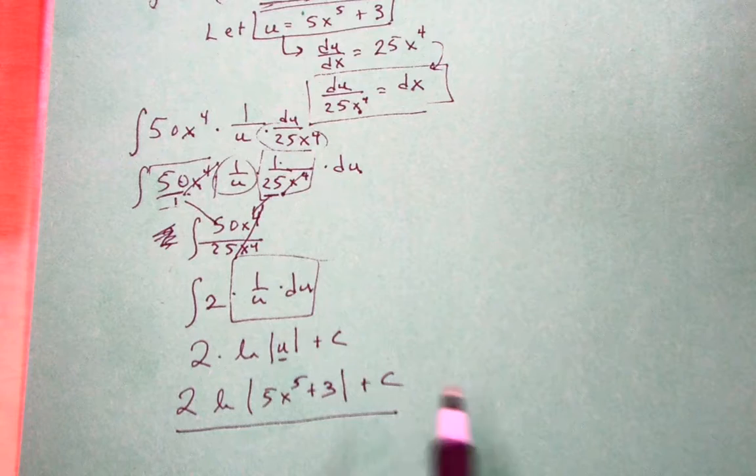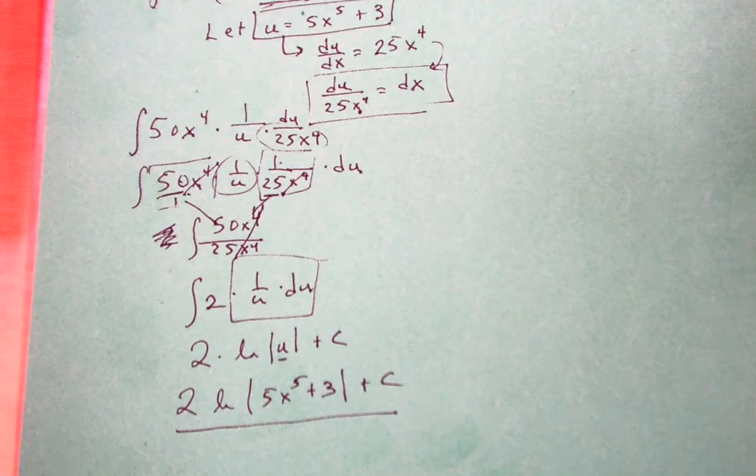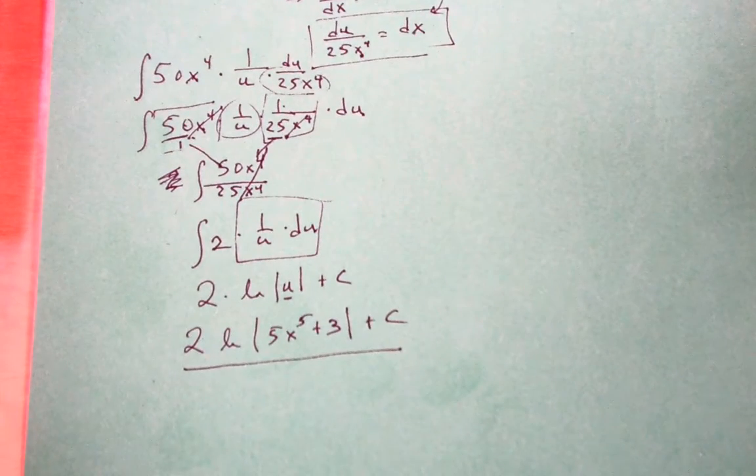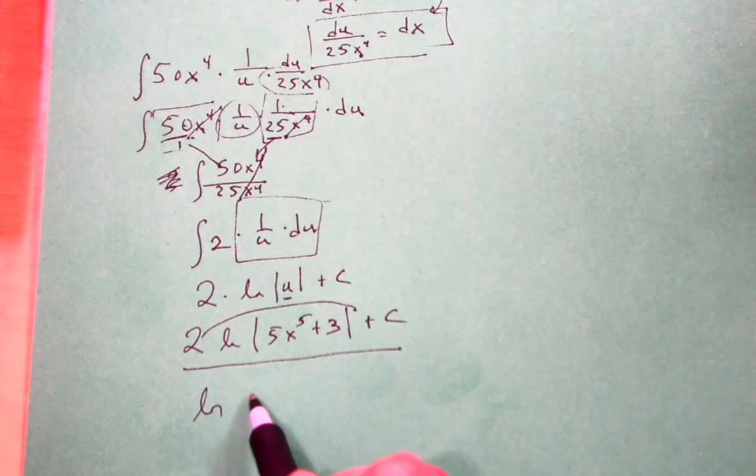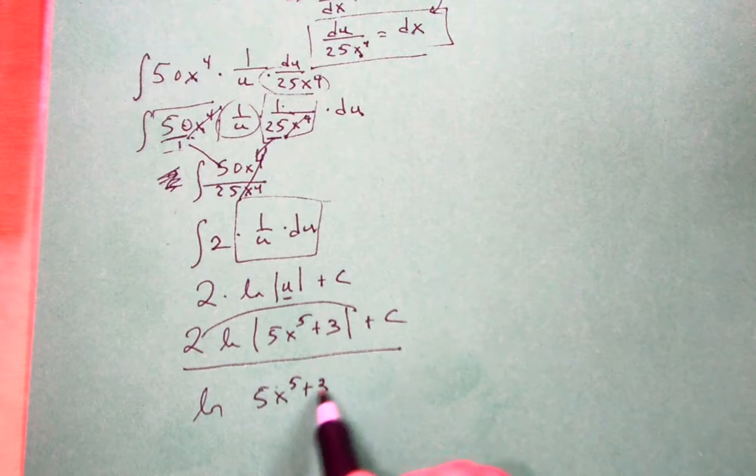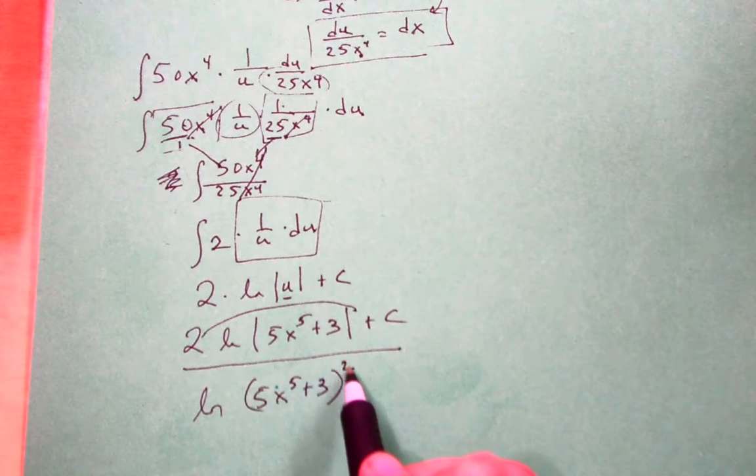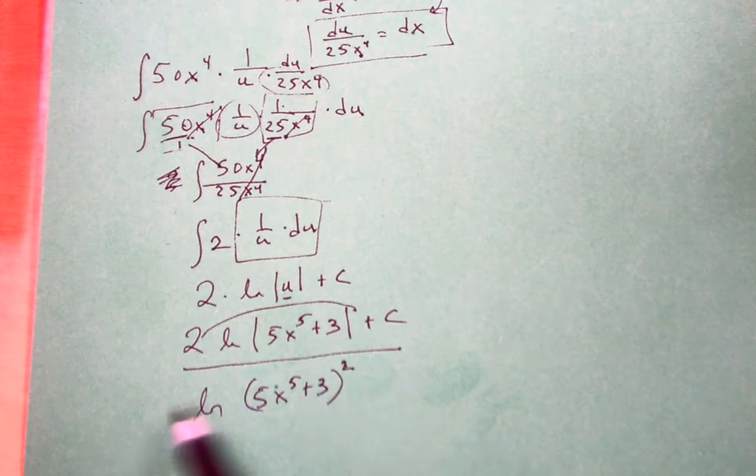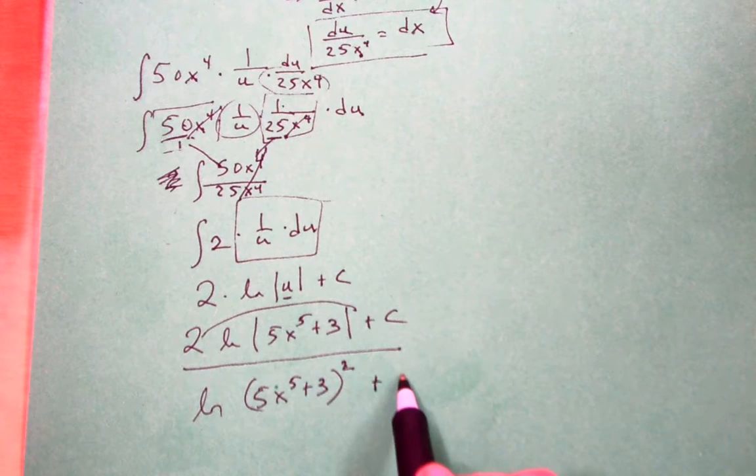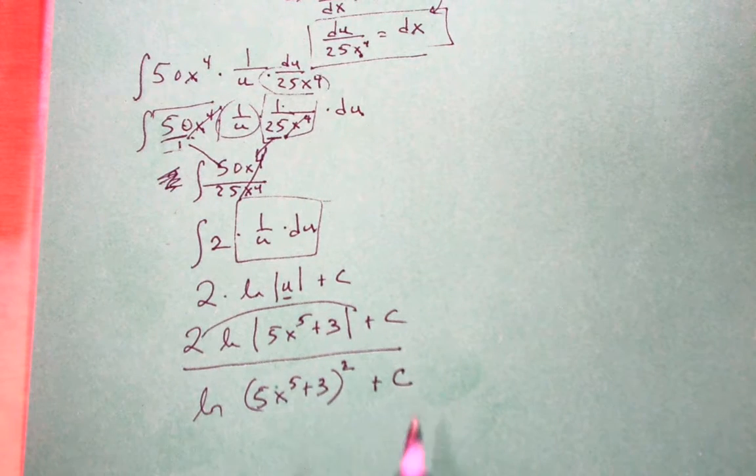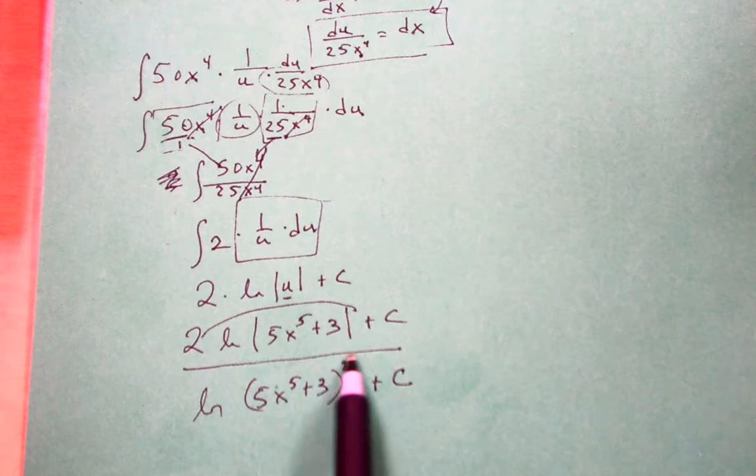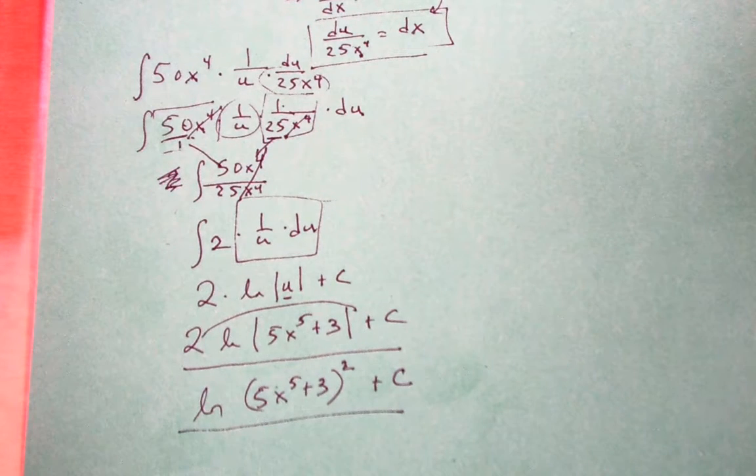Now, on the AP Calc test, this might be an option. If it's not, just remember properties of logarithms. You can bring the exponent up top here, which is to say this is ln of 5x to the 5th plus 3 squared, because properties of logarithms allow you to do this. I don't have time to go over the details now, but you may remember that. Now, you notice the absolute value bars disappeared. In general, you don't want to do that, but I know that anything squared is going to be positive. Thus, it plays the same role as an absolute value.